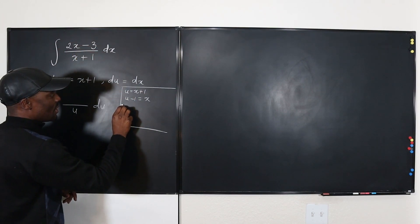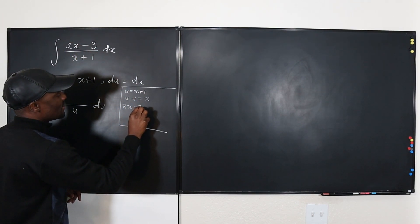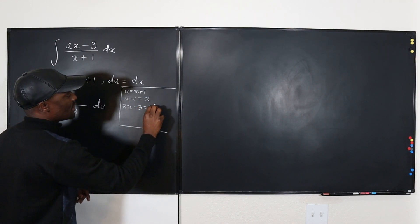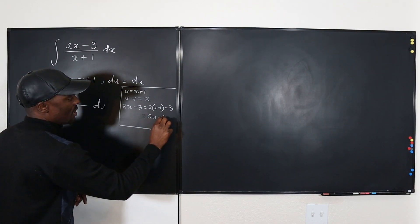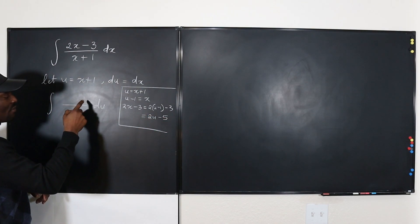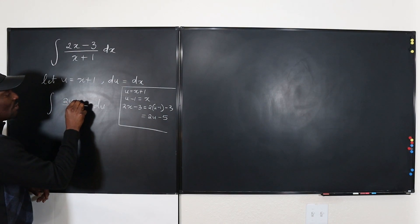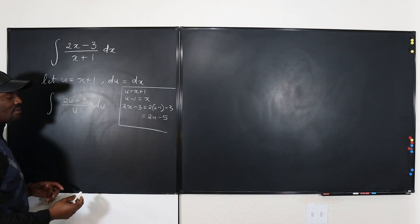Now I need to go replace this with U minus 1. So the top expression, 2X minus 3, can become 2 times U minus 1 minus 3, which when you simplify will give you 2U minus 5. So what I'm going to write on top here is 2U minus 5 DU.